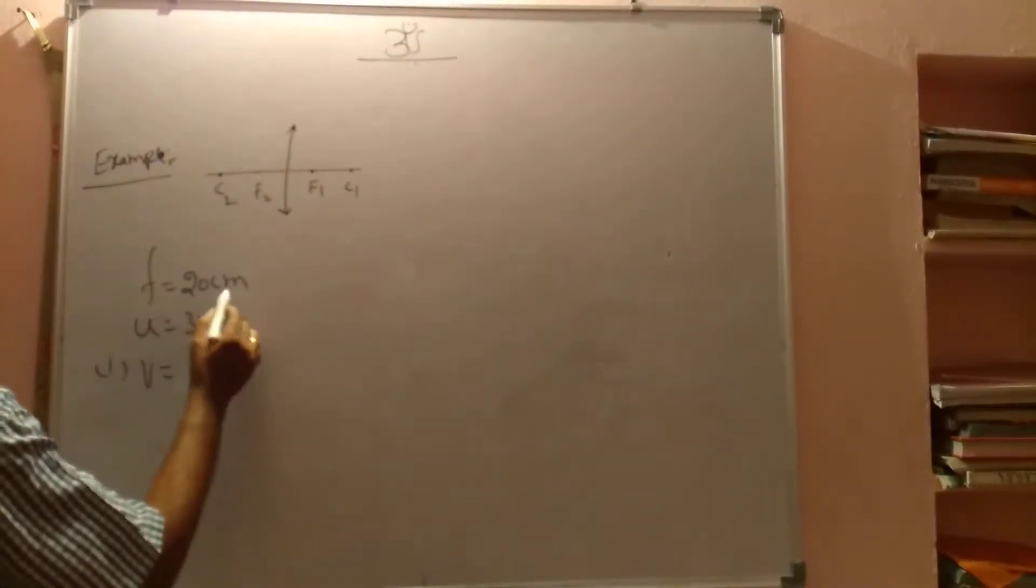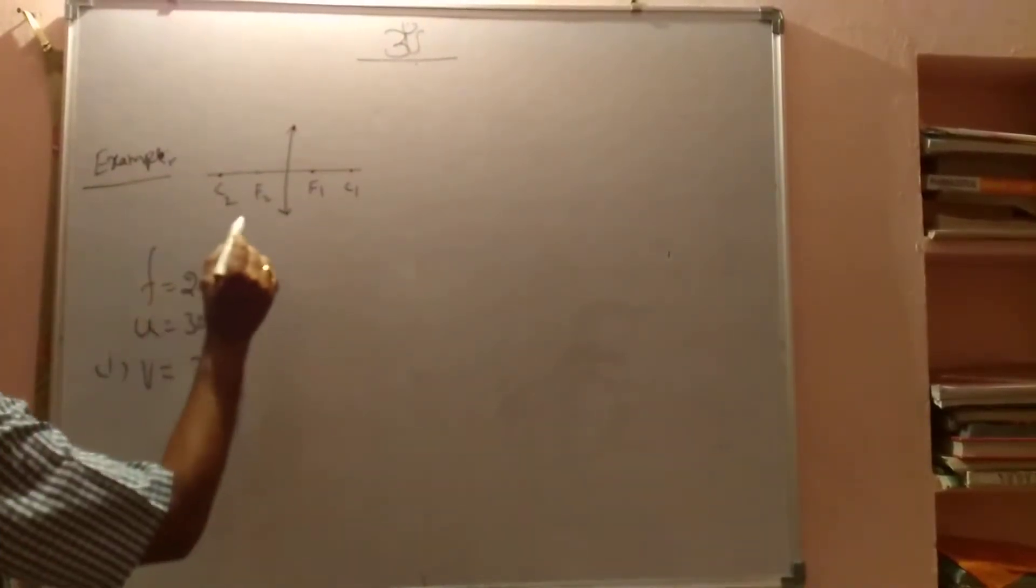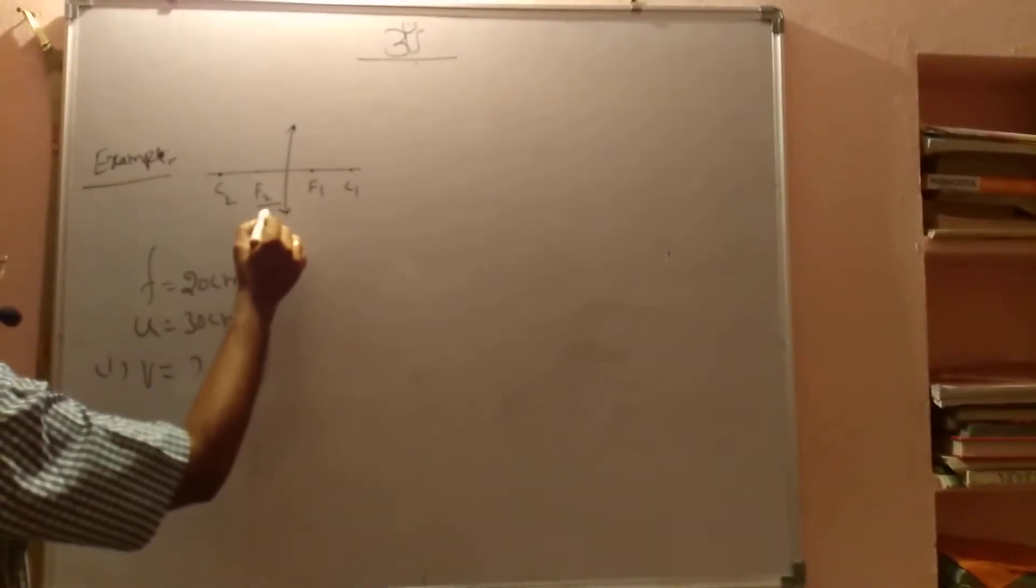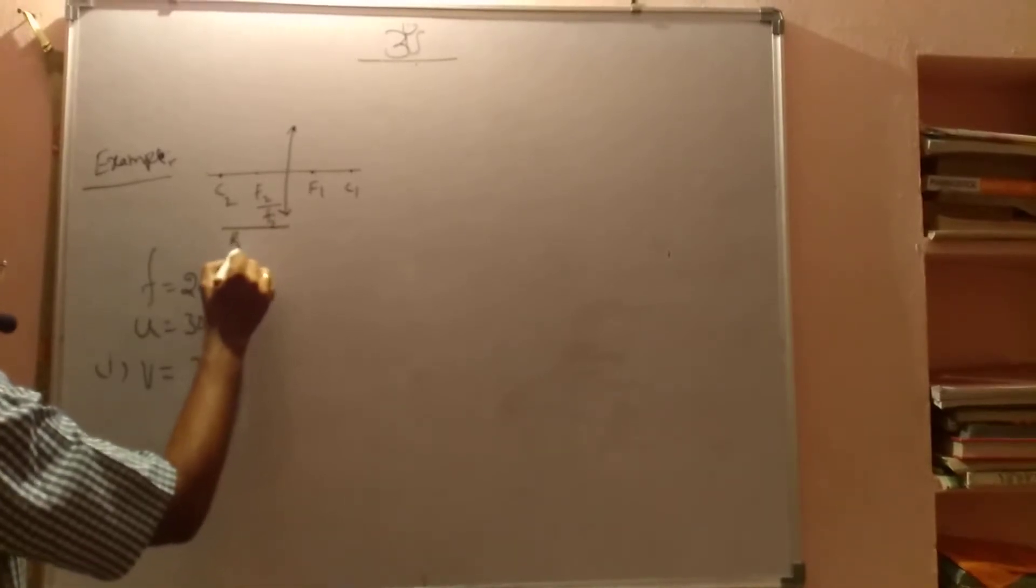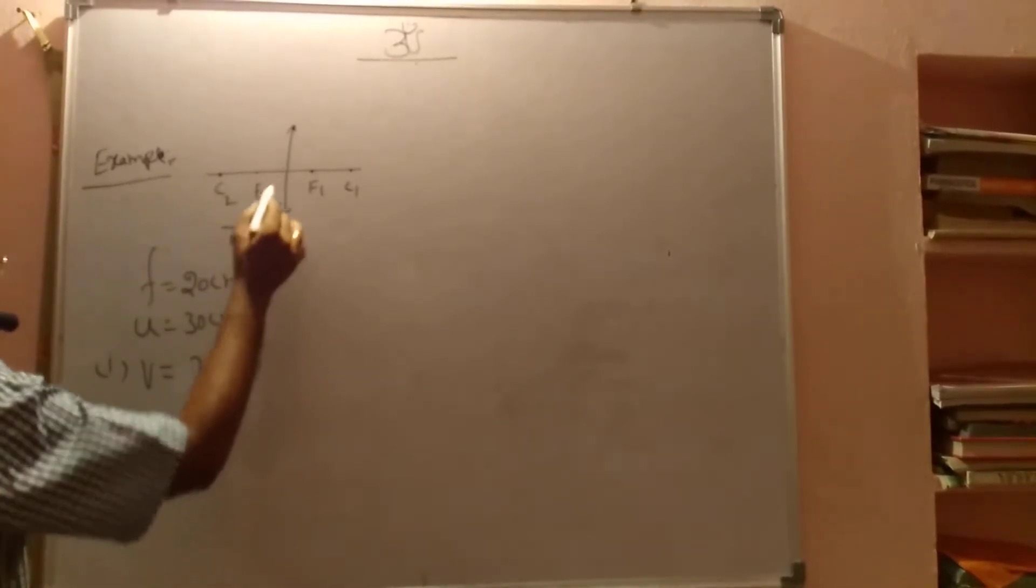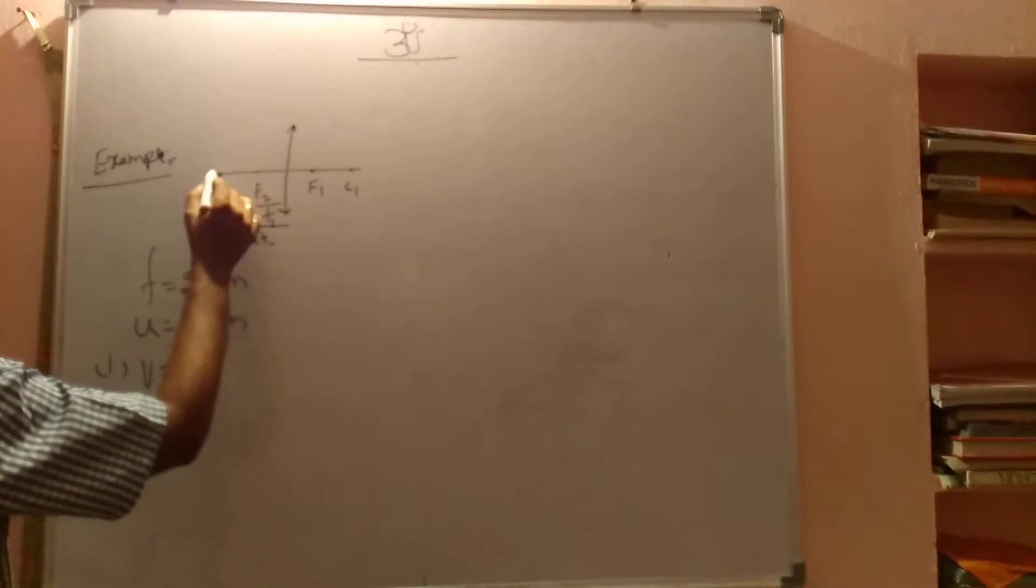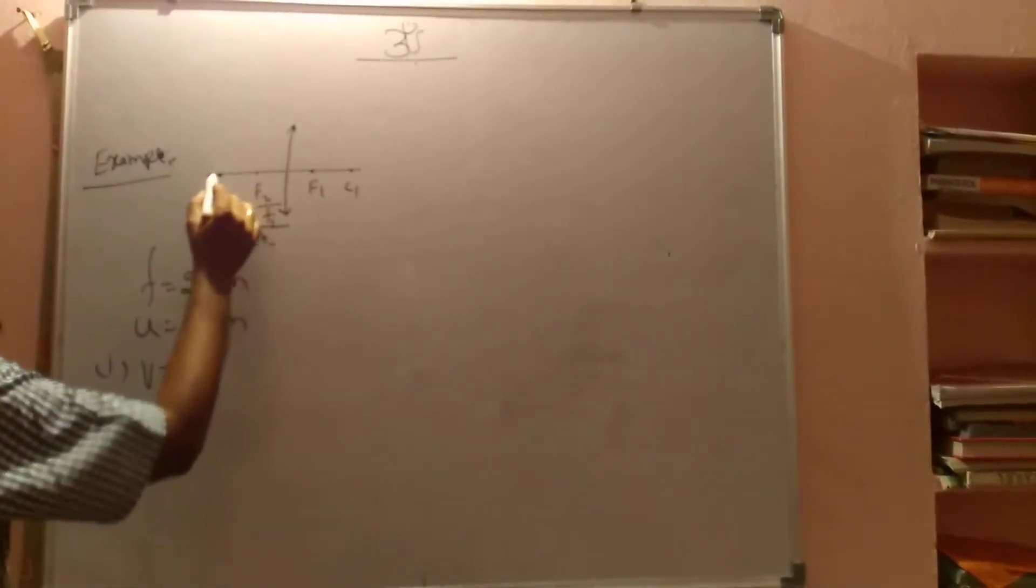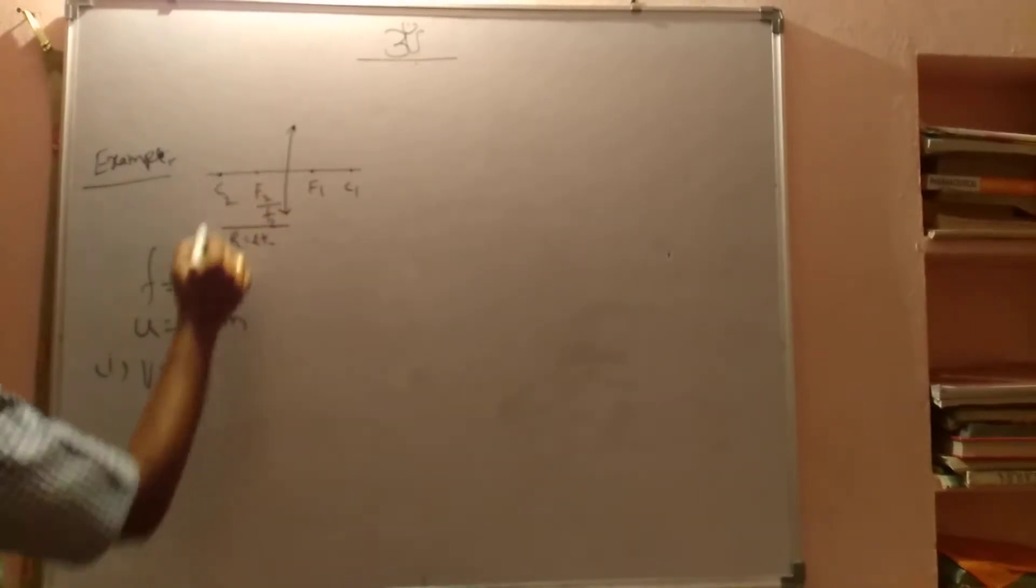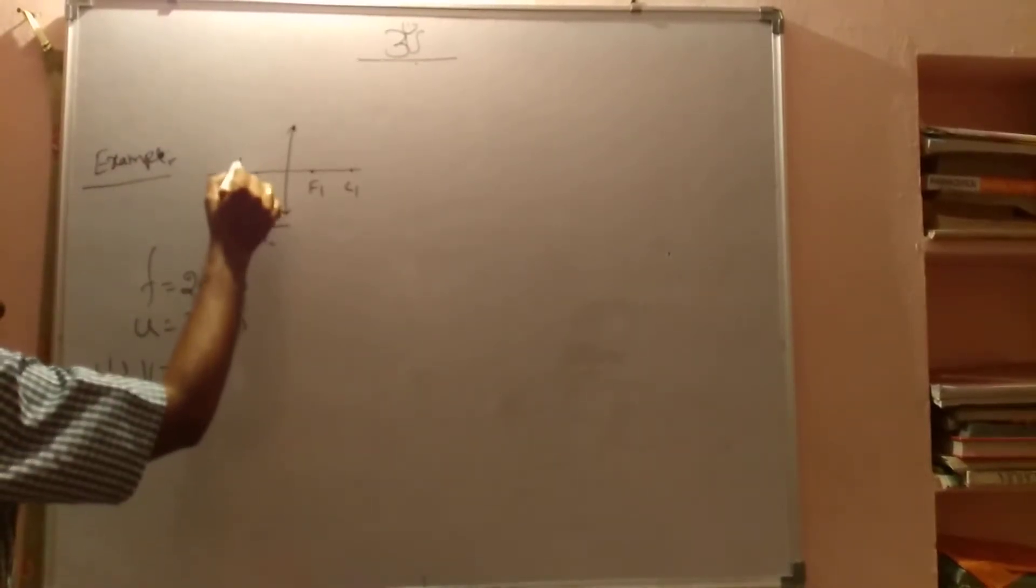If focal length is 20 cm, what about the radius of curvature? If this is F, this becomes R2 equal to 2F2. If this is 20, the radius is 40. So in between 20 to 40, 30 is there. So my object is here.